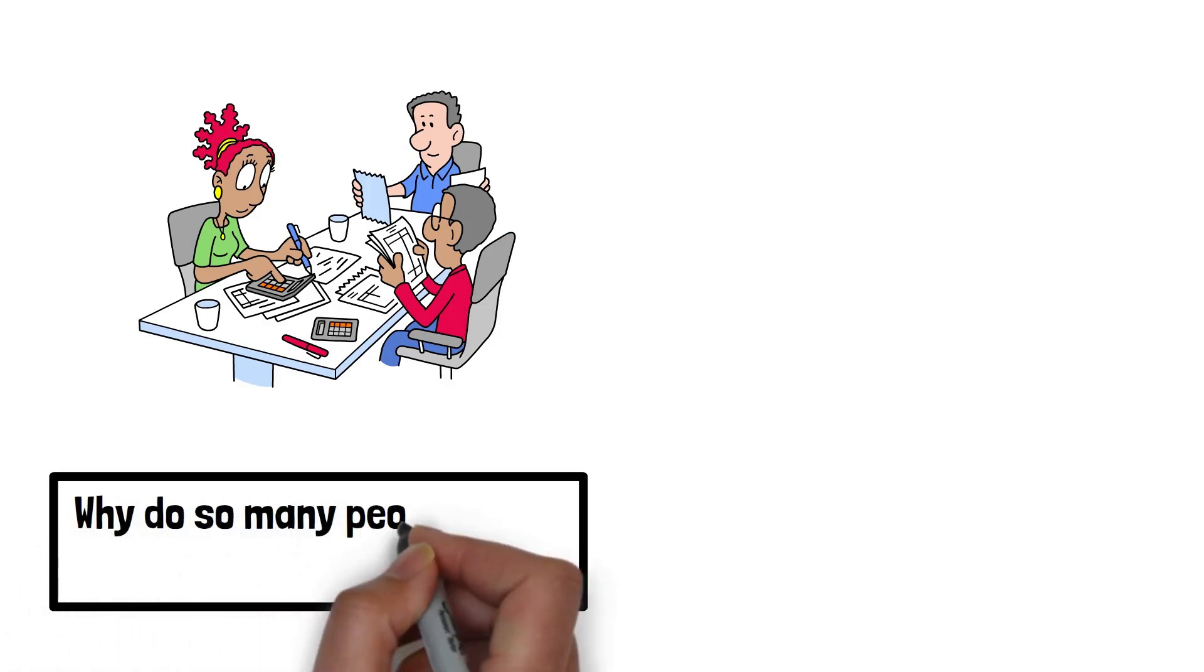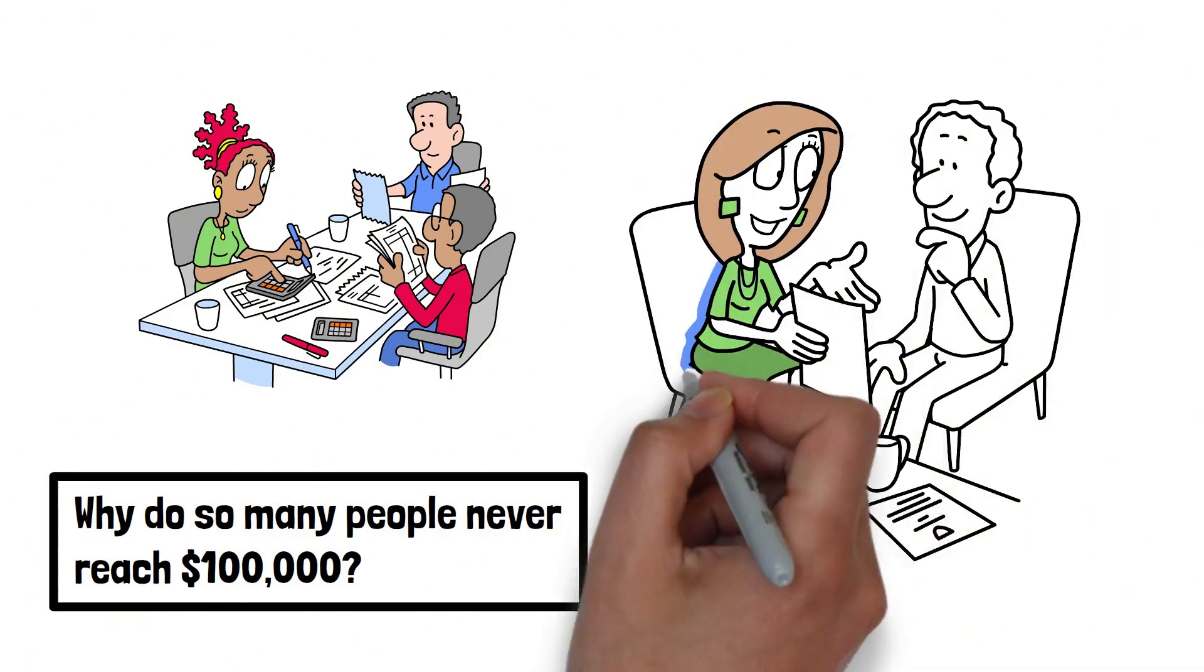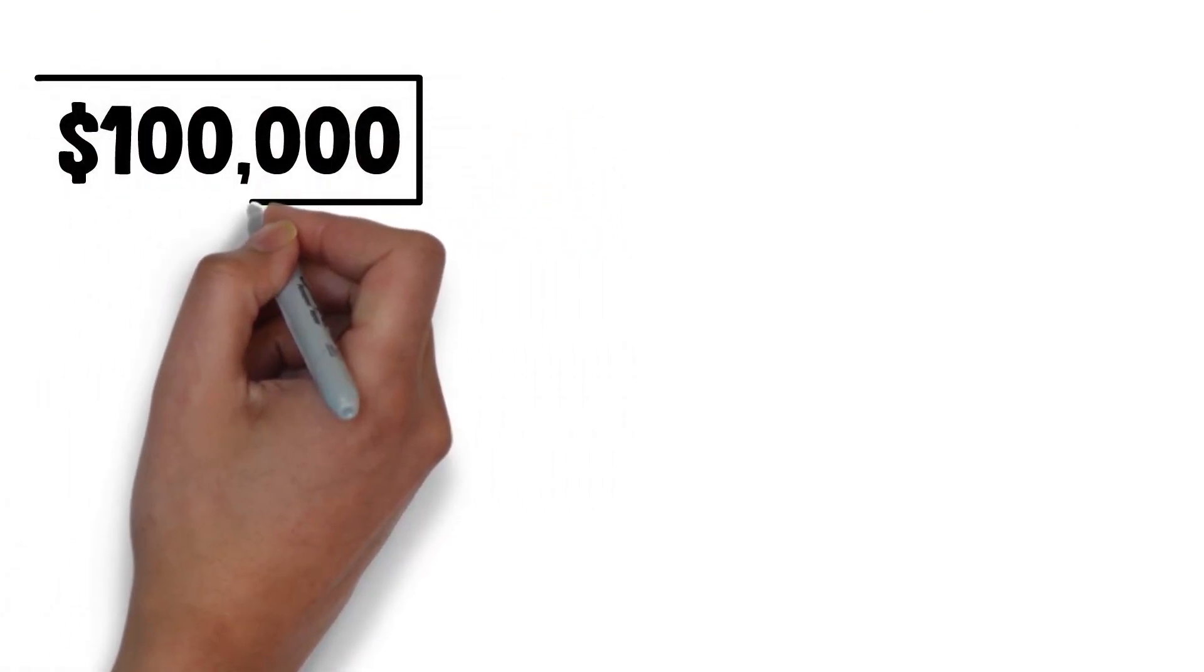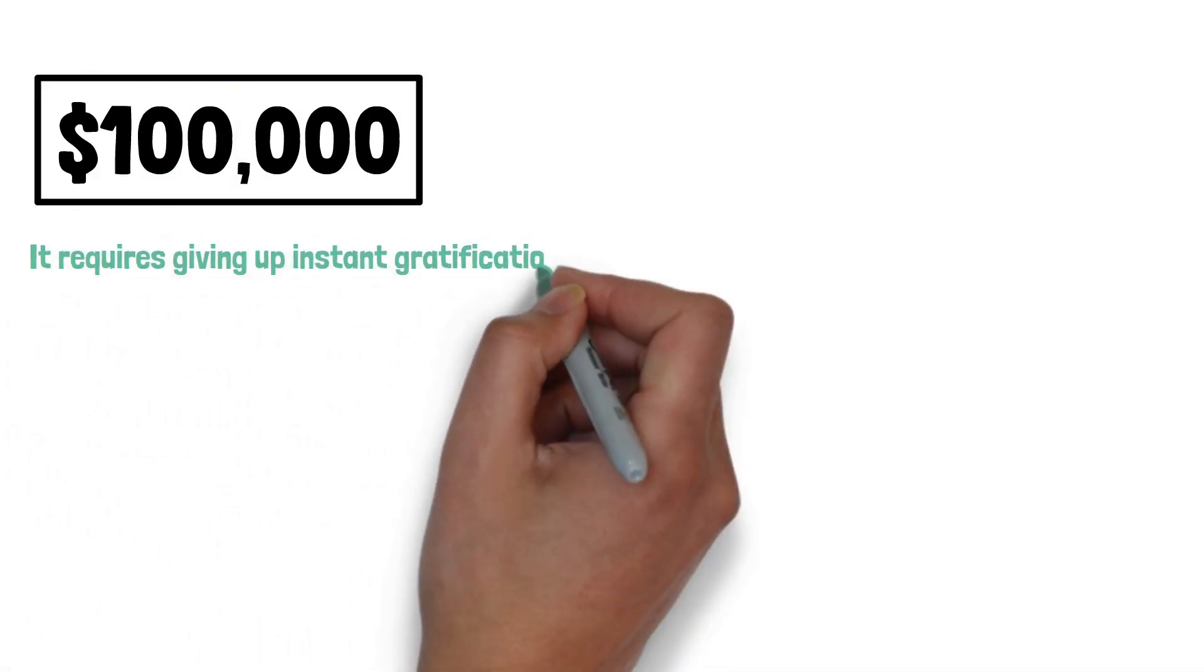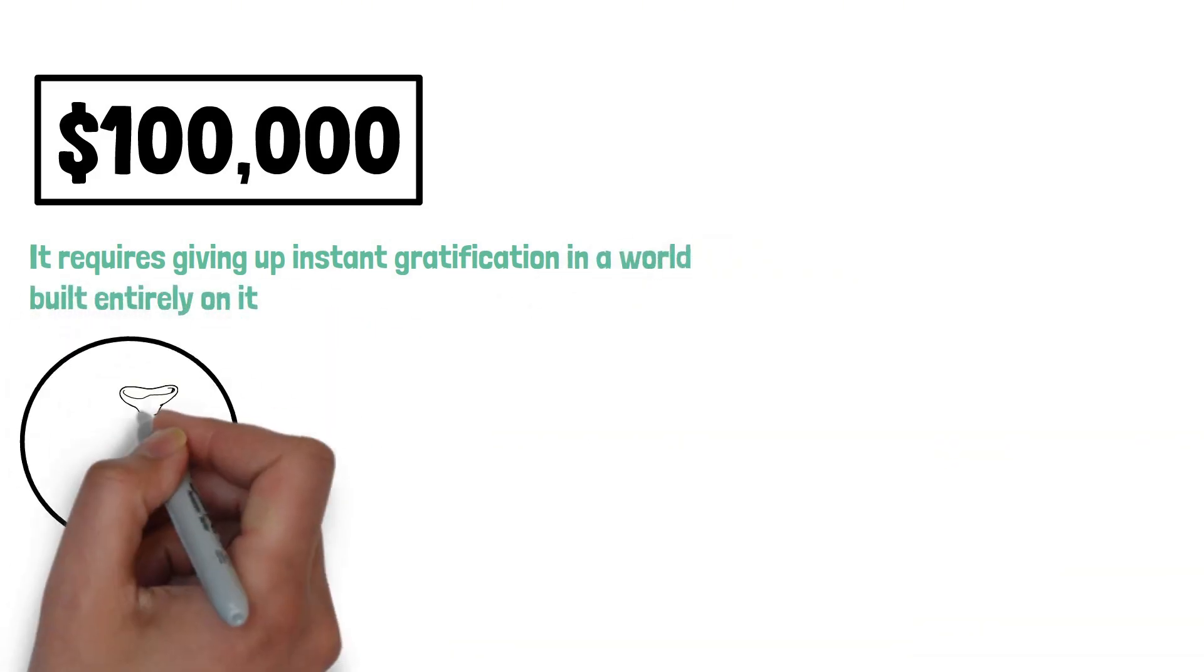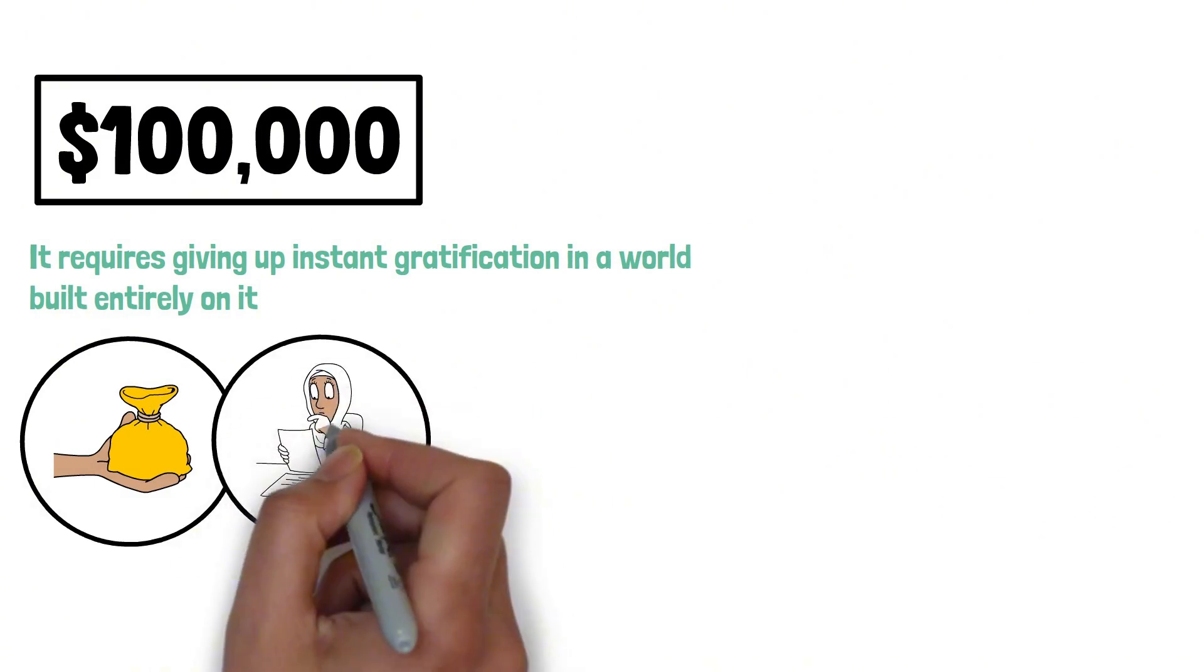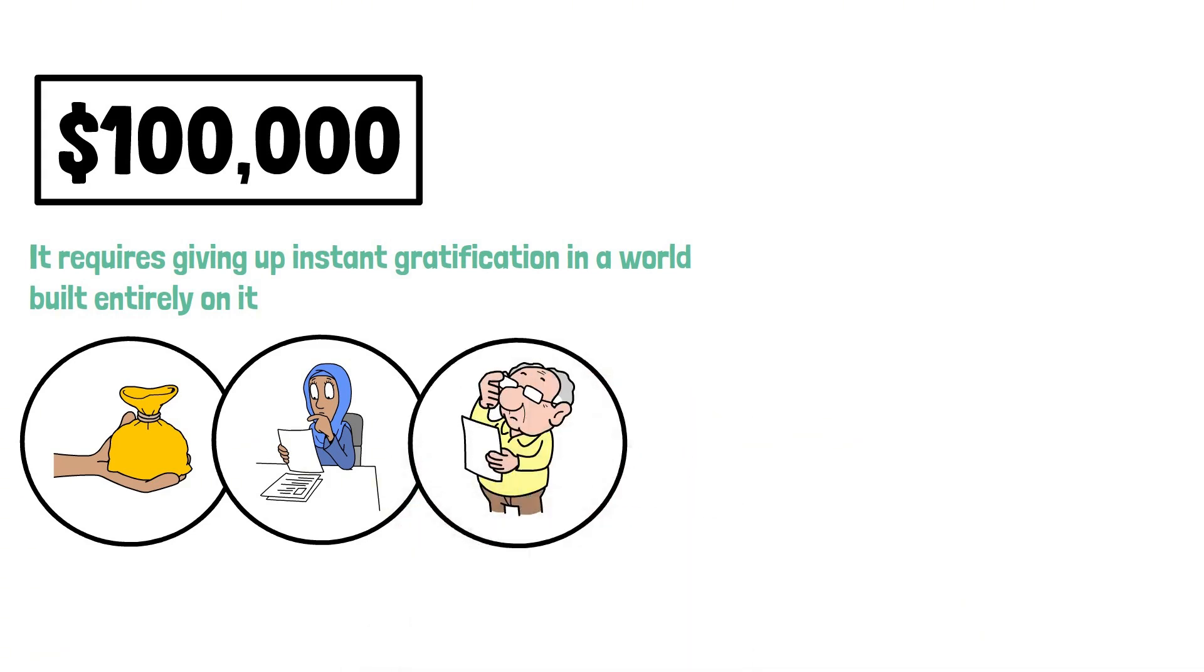So if all of this is true, why do so many people never reach $100,000? The answer is equal parts surprising and equal parts discouraging. It's because the first $100,000 requires consistency most people aren't willing to practice. It requires giving up instant gratification in a world built entirely on it. It requires staying invested when the market drops and everyone around you panics. It requires living below your means while your peers flex with things they can't afford.